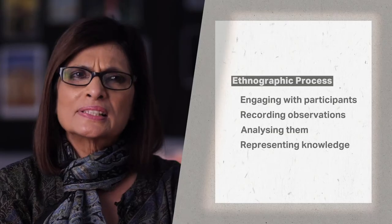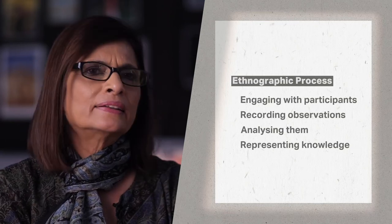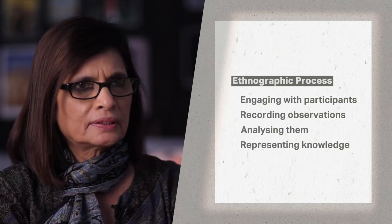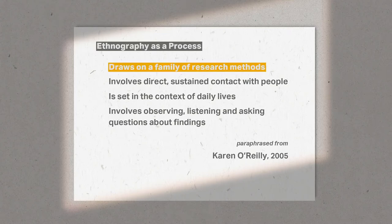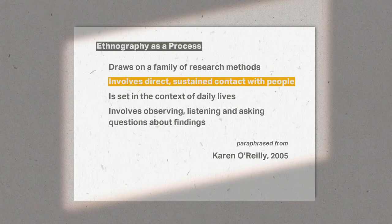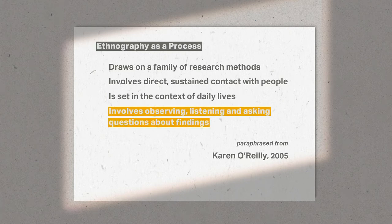Let us return to our question of whether ethnography is a process or a product. If you consider these elements, you may notice that each is both a process and the outcome of that process. Ethnography is a process. In ethnographic practice, we draw on various methods of research, such as interviews and observations. We are in direct contact with our participants in the context of their daily social and cultural lives. We observe various phenomena and interactions and ask questions about what we observe.